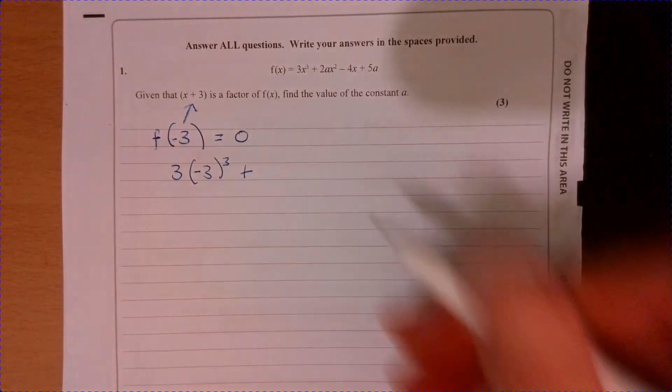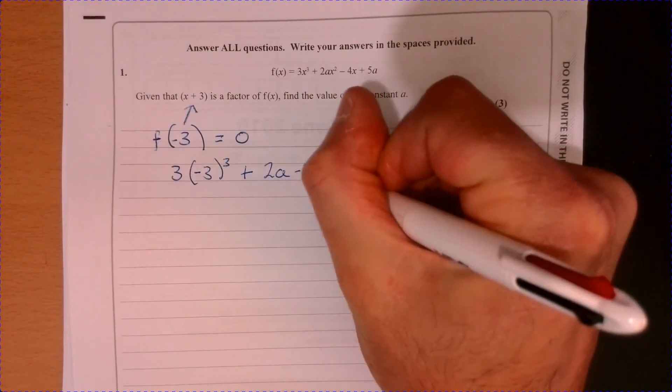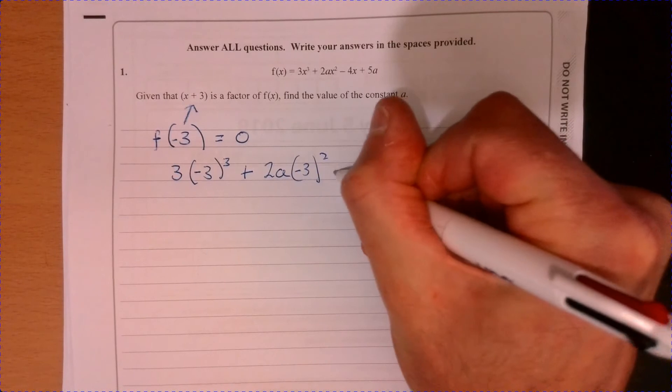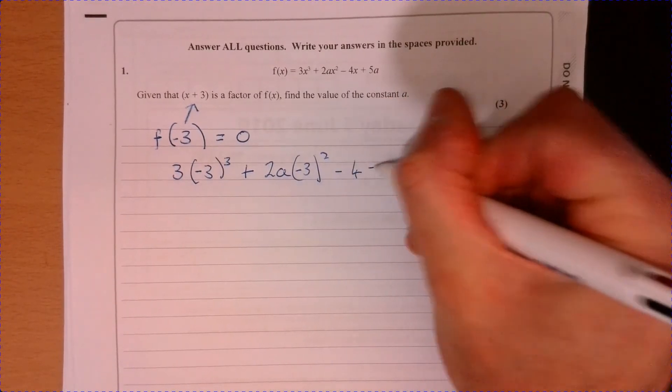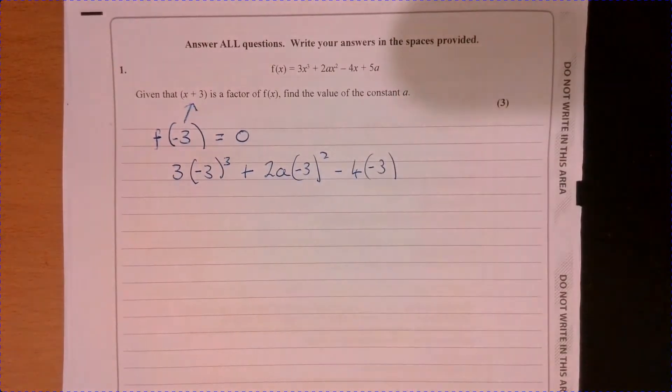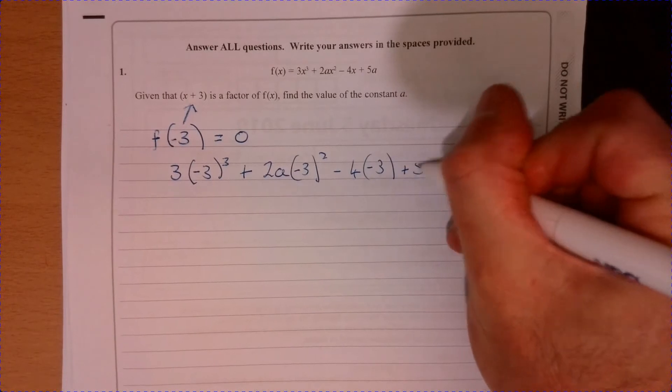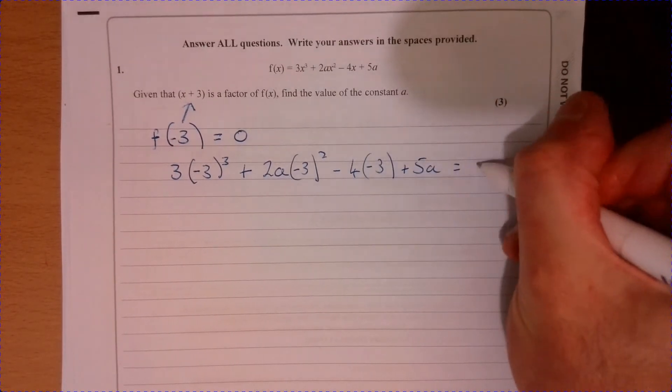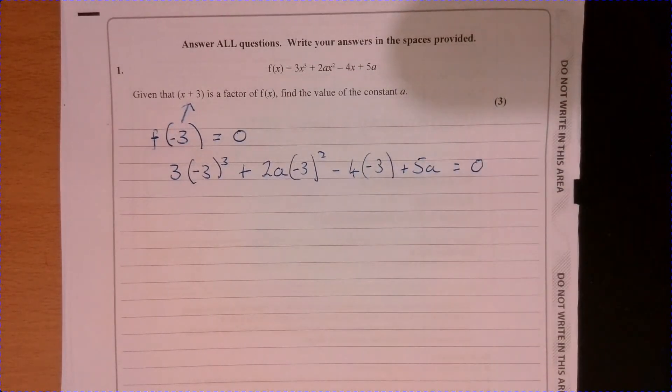So plus 2a minus 3 squared minus 4 times minus 3. Don't work anything out yet. And we know the whole lot is equal to 0.